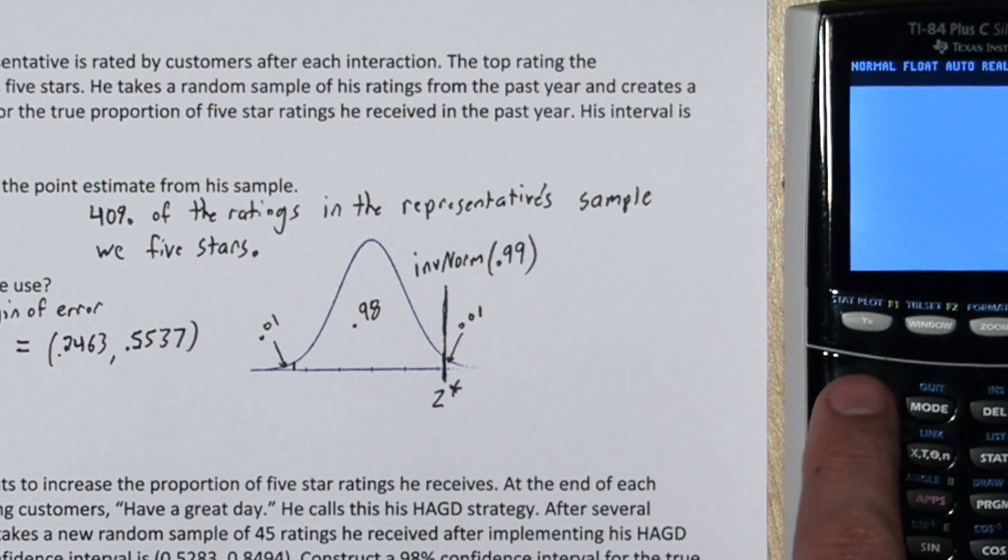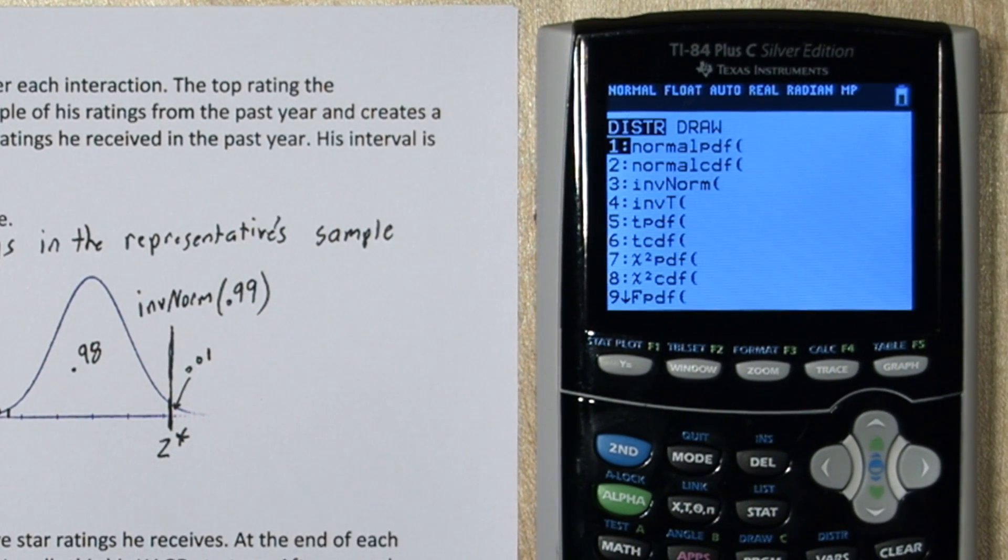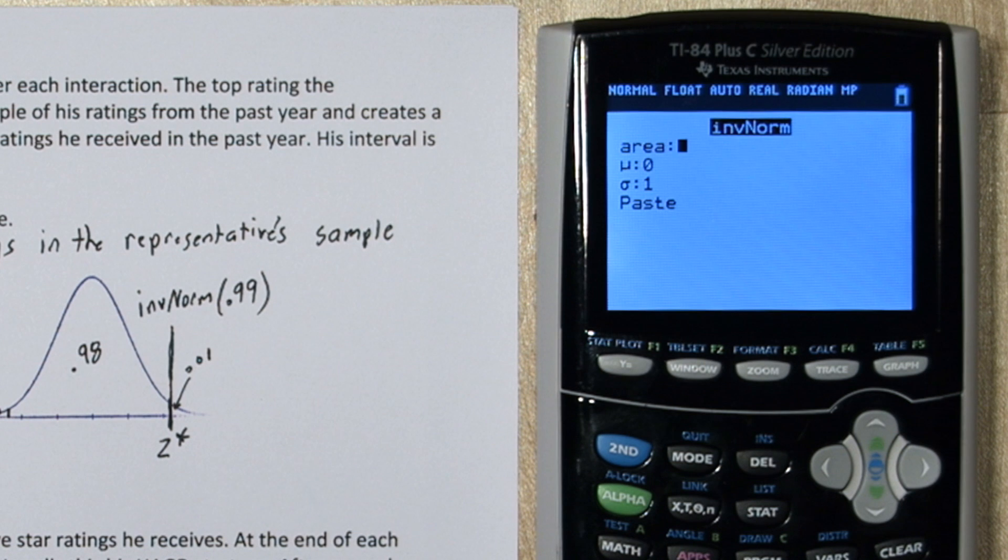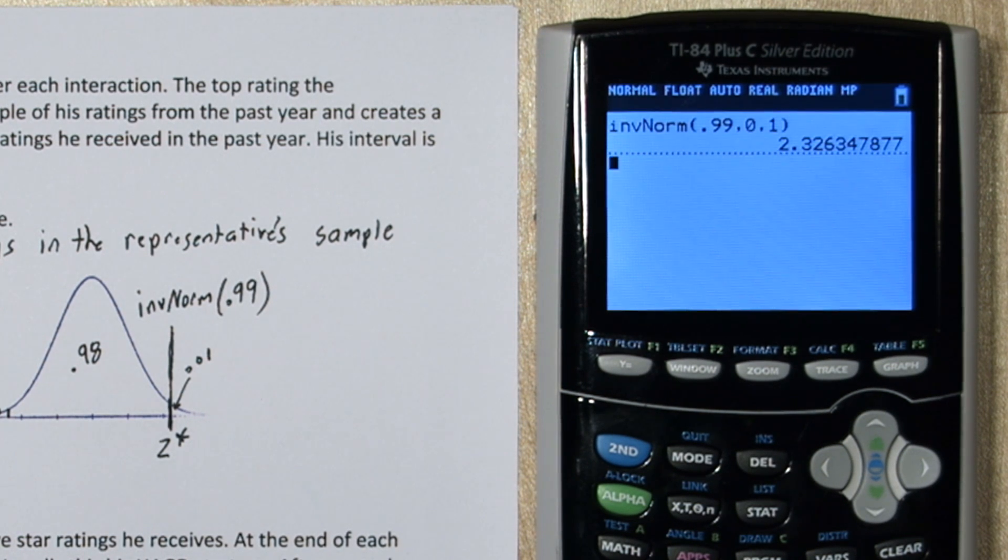To do this on the calculator press 2nd vars, and go down to inverse norm. Type in our area 0.99, and you can leave the mean and standard deviation as 0 and 1. Alright, our z star is about 2.326.